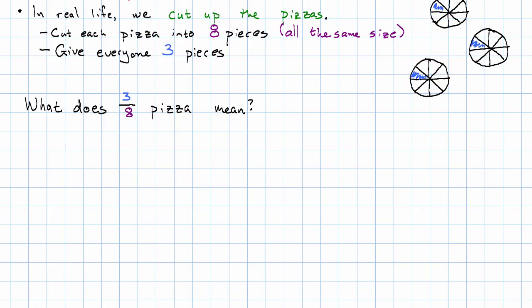What does it mean to have this fraction of a pizza? Well, we would read this as 3 eighths of a pizza. Notice, eighths, notice the ordinal number again. So not 8, eighth.